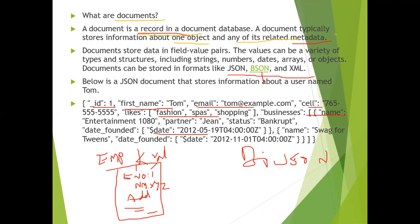All these — JSON, BSON, XML — are different formats of a document, just like PDF, JPEG, PNG, MP3, and MP4 are different formats for other file types. For example, a text file uses TXT format, a PDF document uses PDF format. Similarly, these documents are available in JSON format, BSON format, and XML format.